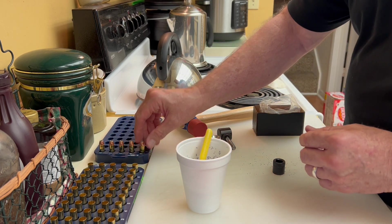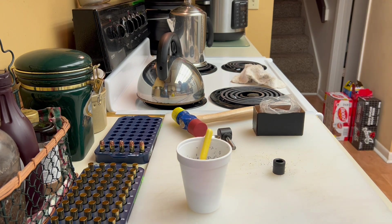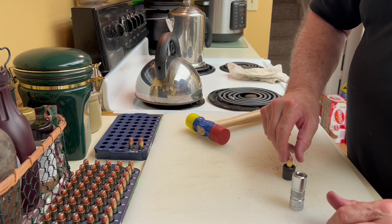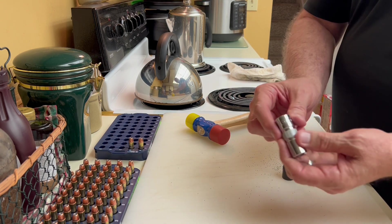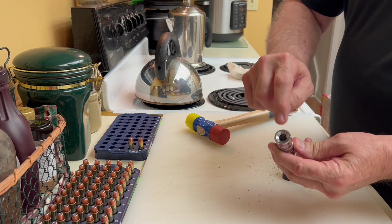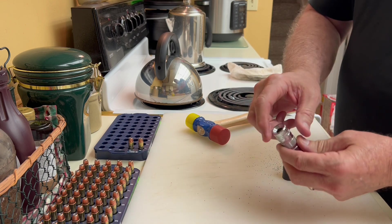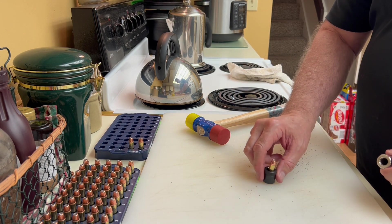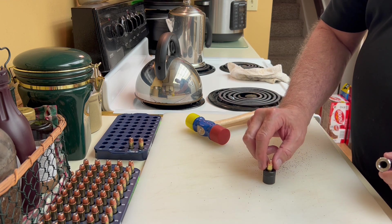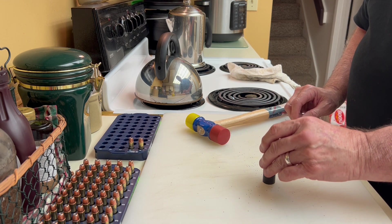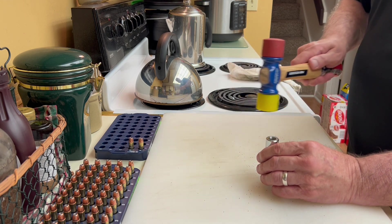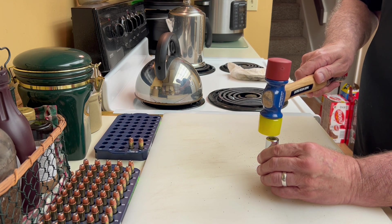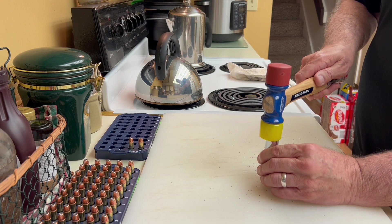All righty, the final stage to all this is crimping. And I take the reversal of the tool, the concave area where I poured the powder down, turn it upside down. I keep, I use my chamber here, set the case down in that, put this over the top. And I'm just going to put a light crimp around that cannelure where it'll hold the bullet in place during recoil when the weapon's firing.